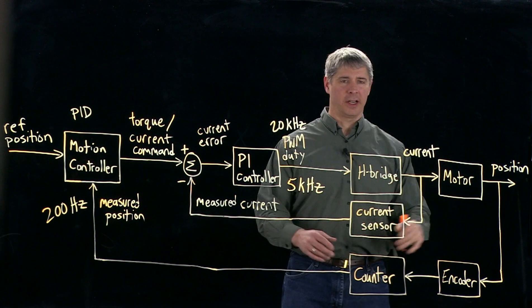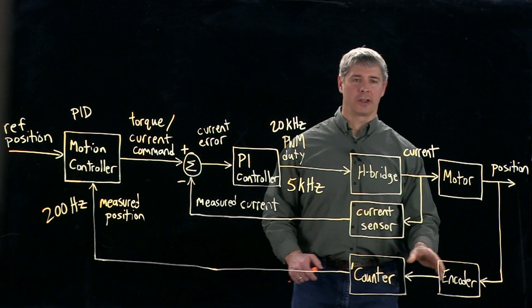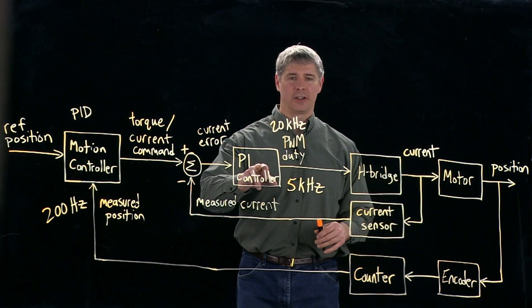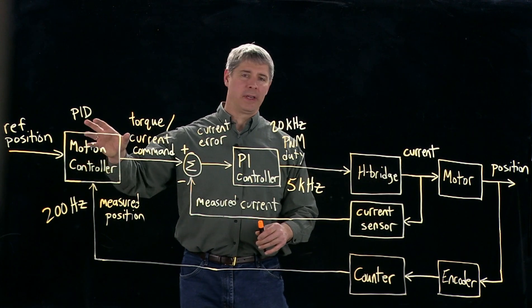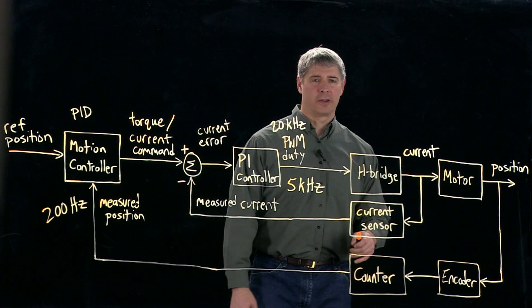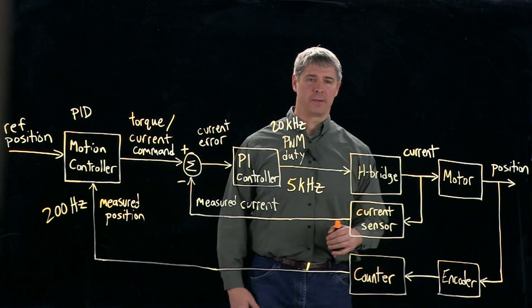So the goal here is to, once you've built your electronics, you have the H-bridge and you've got the current sensor and you've got the counter and encoder, you want to build the PI controller and whatever the motion controller is here, maybe PID for the motor, so that you get good tracking of the reference position, that your measured position follows the reference position closely.